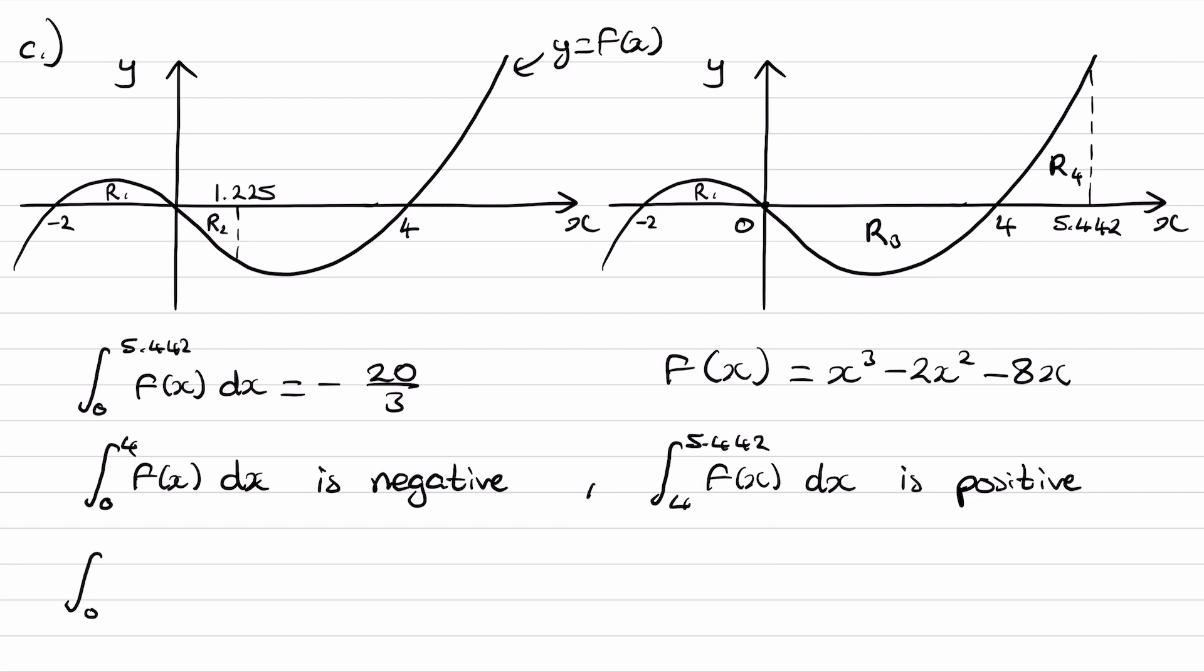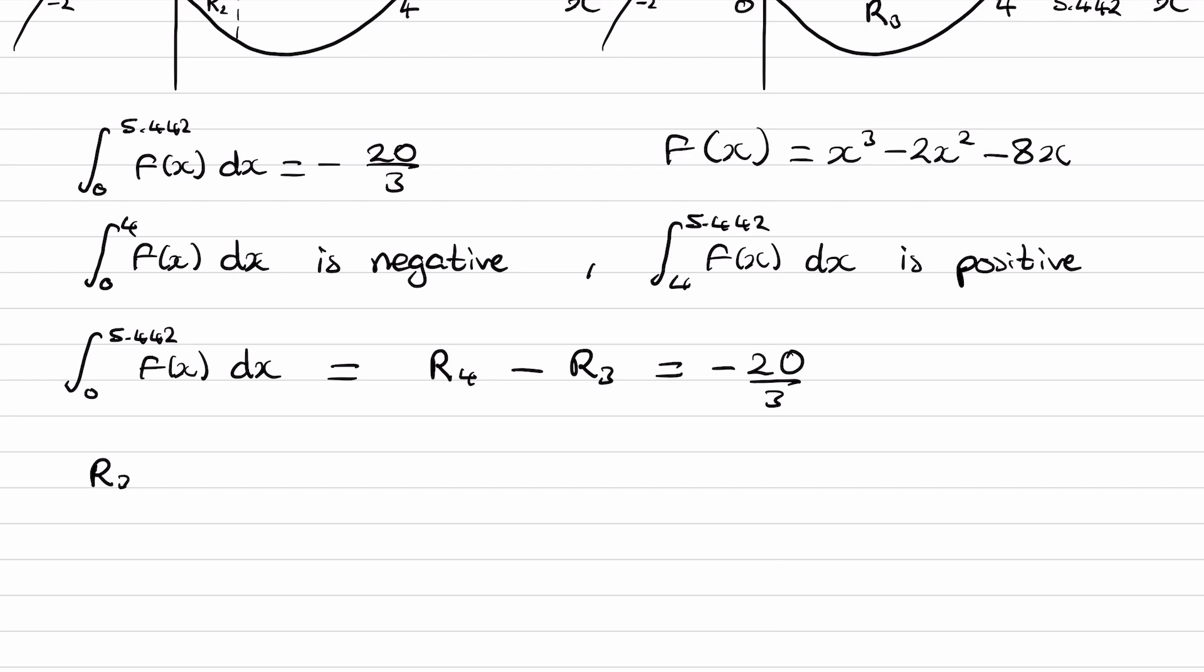But what does this represent? This represents the summation of these two areas. But we have to bear in mind that the integral from 0 to 4 of f of x is negative as it's beneath the x-axis, and the integral from 4 to 5.442 of f of x is positive because it's above the x-axis. The integral from 0 to 5.442 is the sum of the two areas. We'd be doing area r4 minus area r3, because r3, that area would be negative. Or rather, the integral from 0 to 4 would give us that area as a negative value. So the integral from 0 to 5.442 would be the summation of these two things, but r3 is negative. Hence, we'd be effectively doing area r4 minus area r3. This must therefore equal minus 20 over 3. And that means that area r3 is bigger than area r4 by 20 over 3.